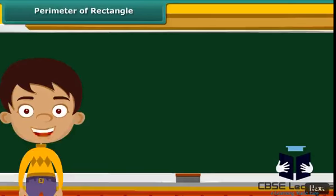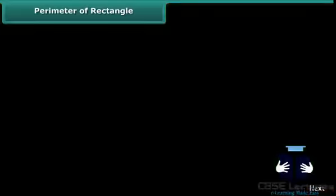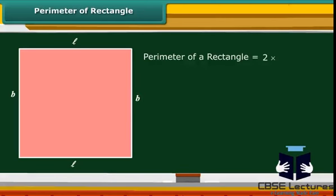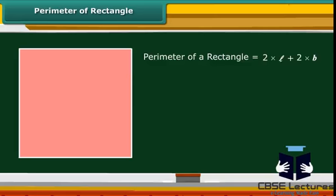Let us now calculate the perimeter of a rectangle. Rectangle is a four-sided geometric figure whose opposite sides are equal. Therefore, the perimeter of a rectangle is twice its length plus twice its breadth. We can rearrange a little and say that the perimeter of a rectangle is twice the sum of its length and breadth.